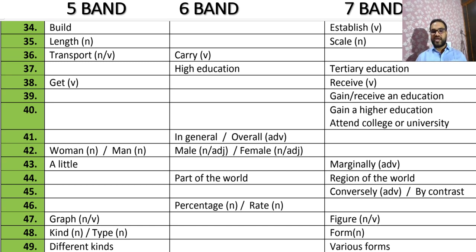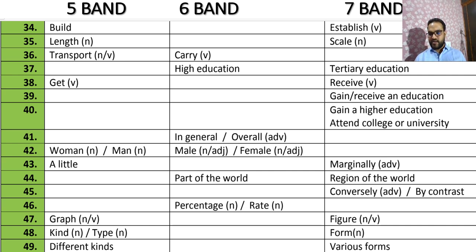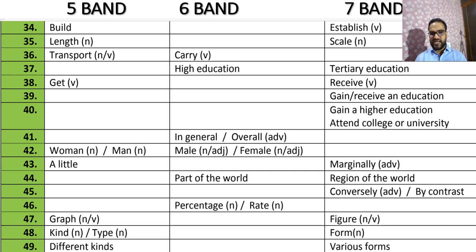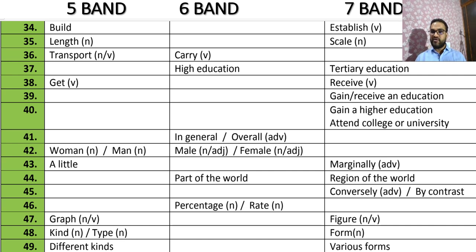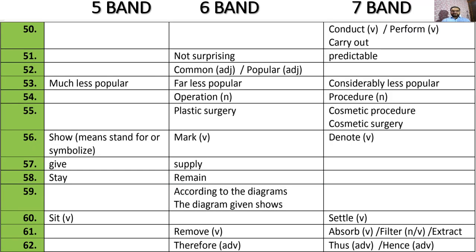For 'women and men,' you can substitute 'male and female.' For Band 7, you can use the phrase 'different genders' or 'both male and female.' For 'part of the world,' you can say 'part of the reason' in context. For 'percentage,' the alternatives are 'rate' or 'ratio.' For 'graph,' you can use 'figure.' For 'kind,' the Band 7 alternative is 'type' or 'form' — for example, 'different kinds' becomes 'various forms.'